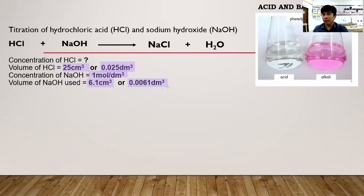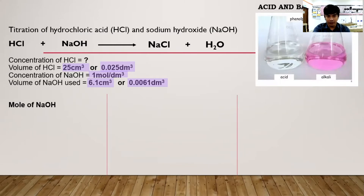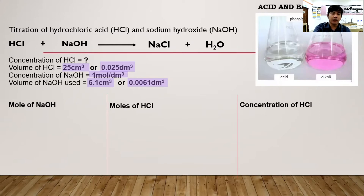Always remember to convert to dm³. We will use three steps to get the answer: first, identify the moles of NaOH; second, the moles of HCl; then the concentration of HCl.